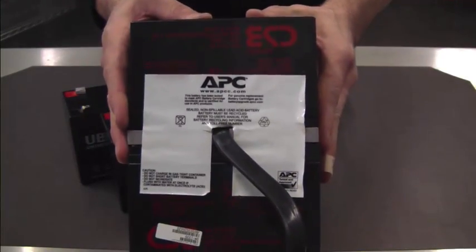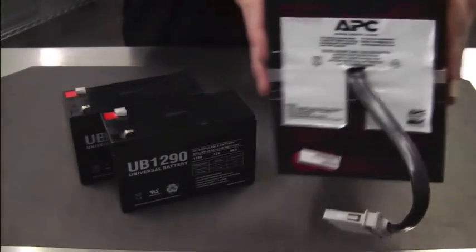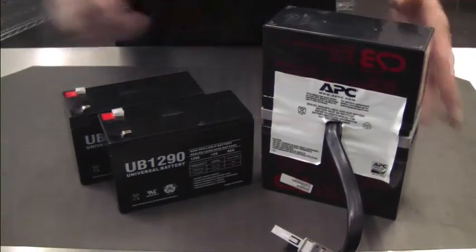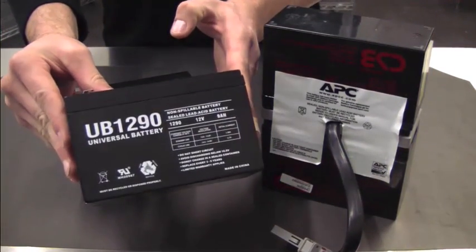The difference is amperage, and amperage means how long a battery backup will last. Today for this replacement we're going to use a UB1290.